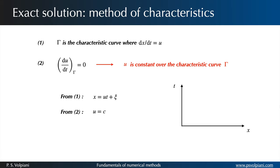Here C is the point on the x-axis where t equals 0 from which the characteristic curve is drawn. In other words, it is the x-intercept of the characteristic curve drawn in the x-t plane.